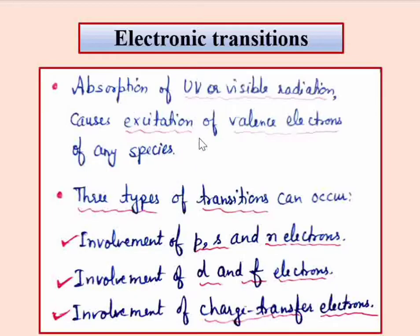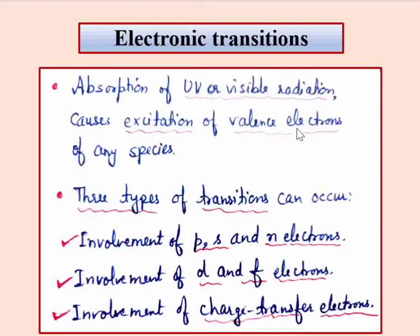Now we will see how electrons get excited. When any substance absorbs electromagnetic radiation energy, different types of processes occur. If a substance has valence electrons that excite, the electromagnetic radiation range involved is UV-visible radiation. When a substance absorbs UV and visible range radiation, that is the excitation of valence electrons, and electronic transition becomes possible.